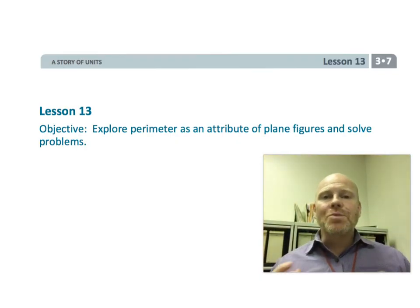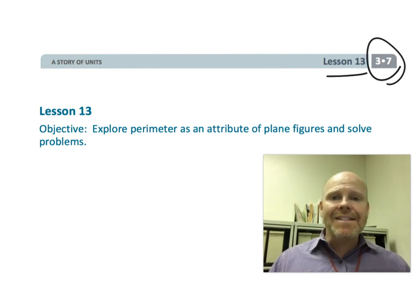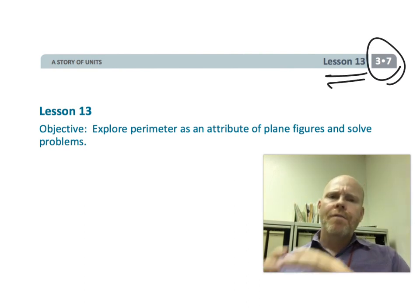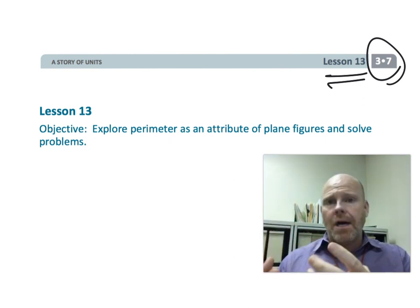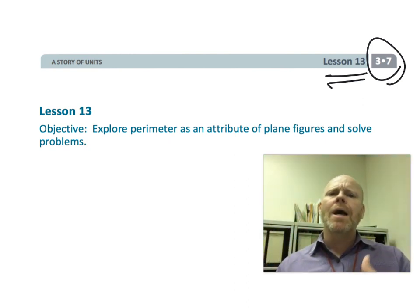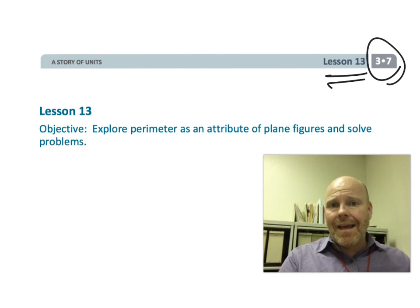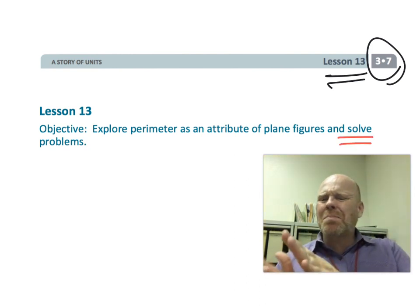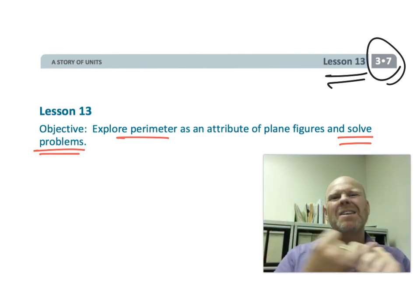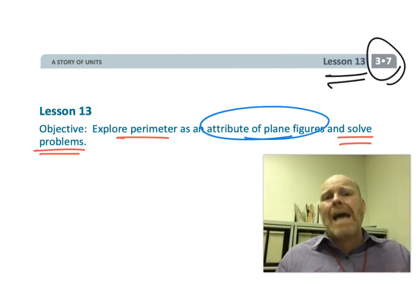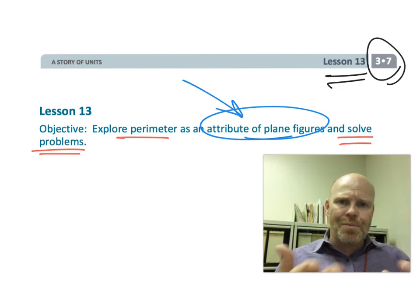Alright, this is third grade module 7 lesson 13. In this lesson, students are moving from measuring the lengths of polygons and then finding the perimeter to now they're being given the measurement lengths and calculating it. So it moves perimeter from something that we touch and experience to something we calculate, and it becomes an attribute of these figures. So let's get started.